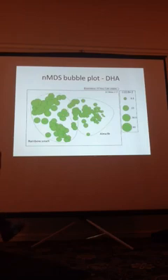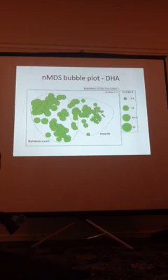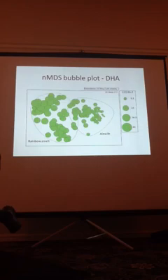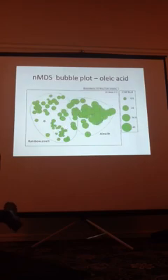Just another way to look at that — on a specific fatty acid scale, you can see the DHA I was talking about. You can see that the alewife group has far less DHA than the rainbow smelt. In general, these bubbles are scaled to the concentrations of each fatty acid. And then the exact opposite is true for oleic acid.